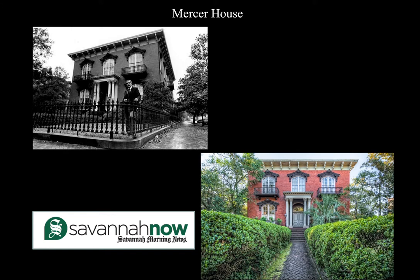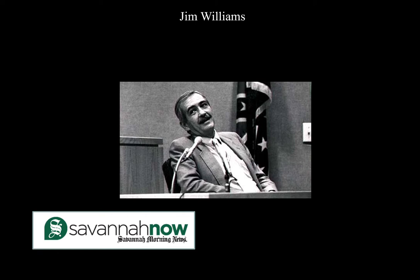Here we have Jim Williams. This is the character that the story really focuses on. This is a picture of him standing outside Mercer House, which is where a lot of the events are going to take place. And here's a more modern picture of Mercer House. Jim Williams — here he is on trial. I don't want to talk too much about what he's on trial for because I don't want to give anything away, but this is him at the actual trial.